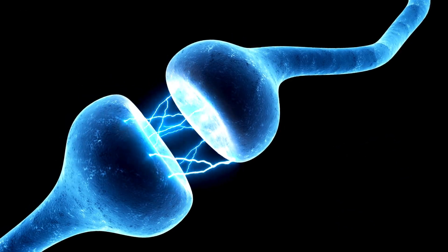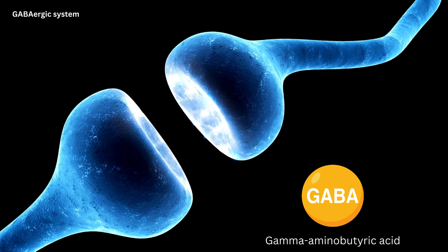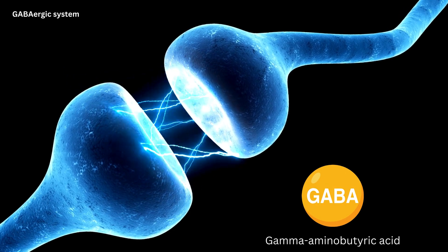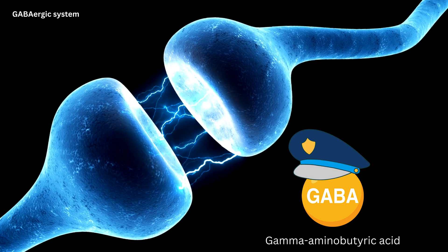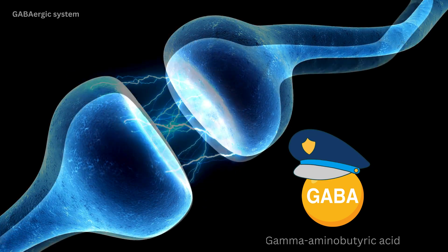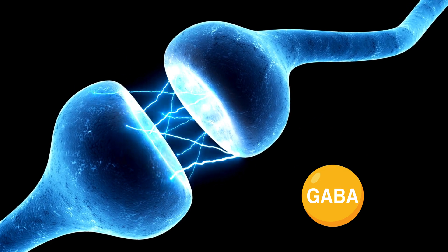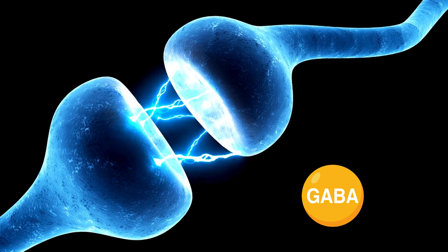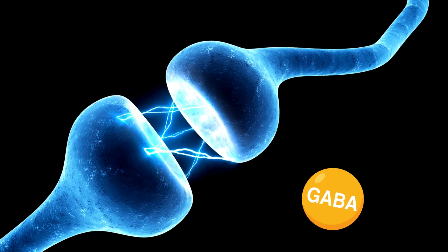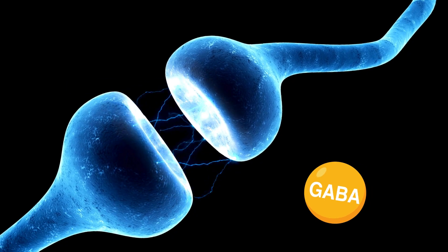Now, there's a special messenger in your brain called GABA, gamma-aminobutyric acid. Think of GABA as the traffic cop of your brain. Its job is to calm things down when they get too hectic. Imagine your neurons as cars on a busy road. Sometimes these cars start honking too much and causing chaos. That's when GABA steps in.